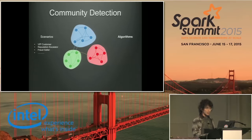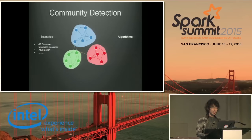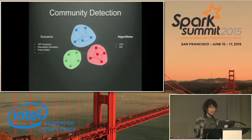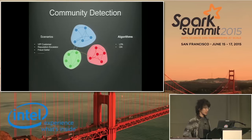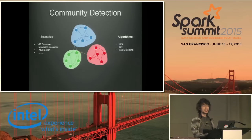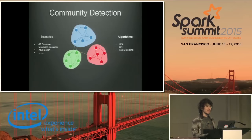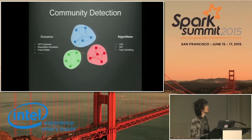There were quite some mutual algorithms on community detection from academia, such as LPA, GN, and fast unfolding, with different speed and accuracy. And a lot of papers and experiments have been done to improve them. We could spend a whole day discussing this topic, but obviously we are not doing that today, and we'll move on to the next point.